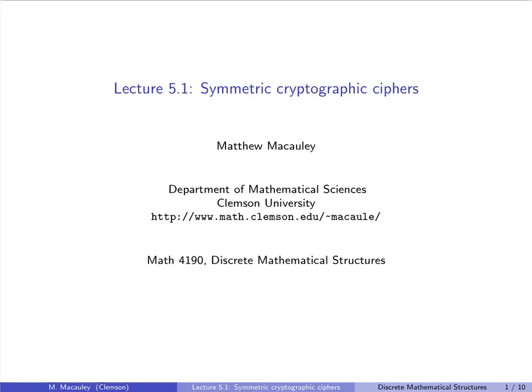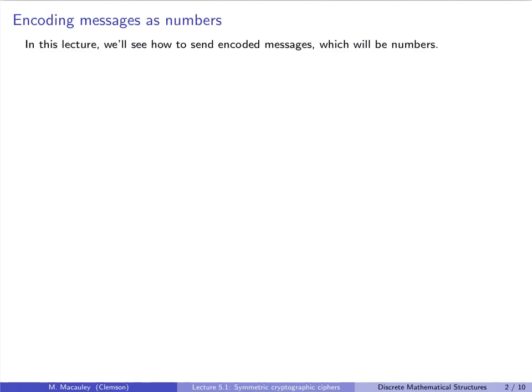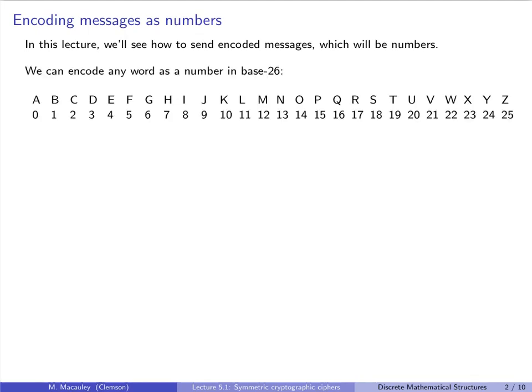Welcome to lecture 5.1, Symmetric Cryptographic Ciphers. In this lecture, we'll see how to send encoded messages, which will be numbers. By this, I mean that we can encode any word as a number in base 26. So A corresponds to 0, B to 1, C to 2, and so forth. We can expand this if we want to include extra characters like spaces or punctuation marks.